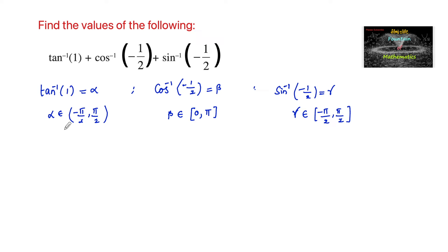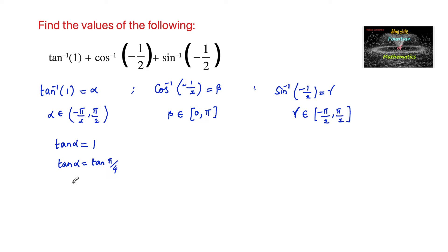For tan inverse of 1, we can write tan alpha equals 1, which is positive, so we consider it in the first quadrant. So tan alpha equals tan pi by 4, therefore alpha equals pi by 4, and hence tan inverse of 1 is equal to pi by 4.